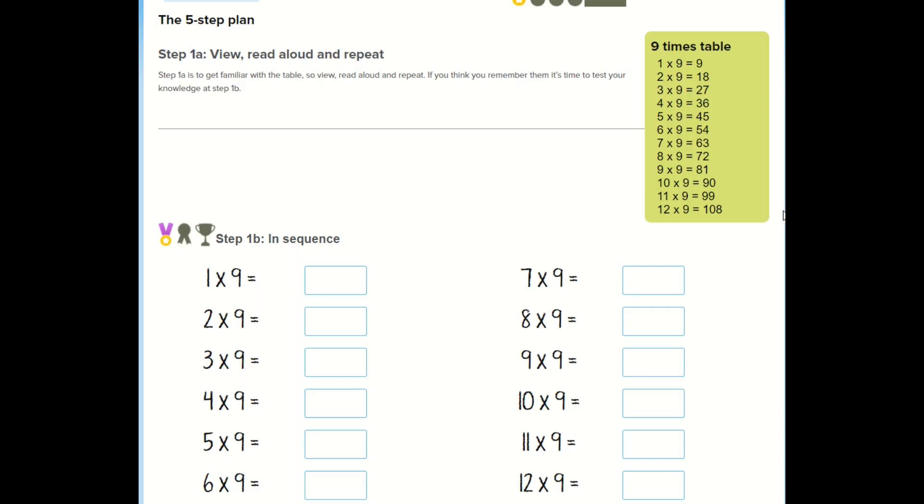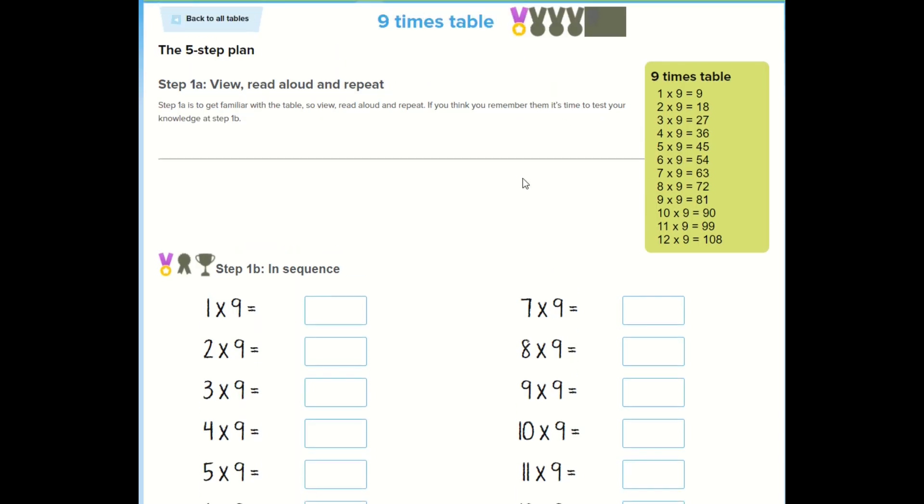We're starting out today with our nine times tables on timestables.co.uk. They've got a five step plan to help us learn and practice our nine times tables, ready for us to try some questions later on. Step one is to read the times table out loud and repeat it as many times as we need to. Let's say this one together.